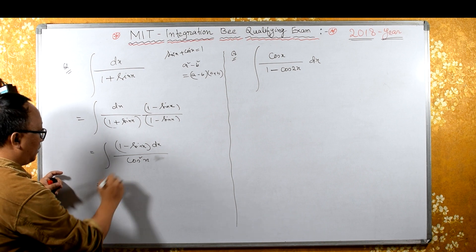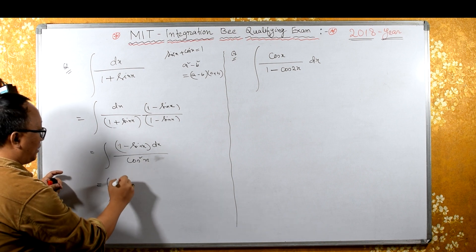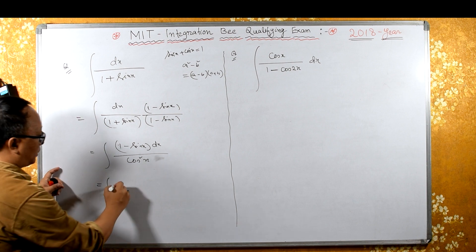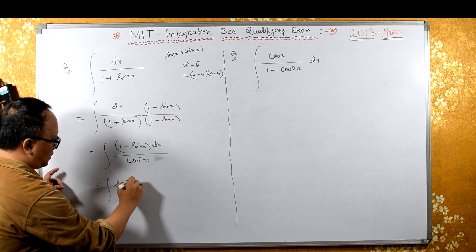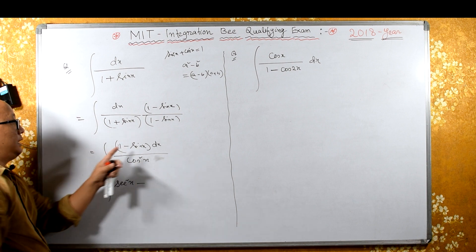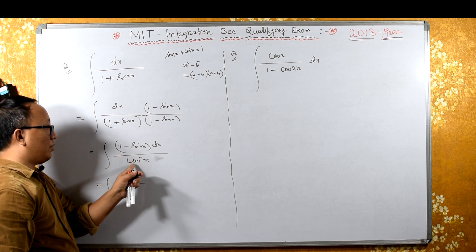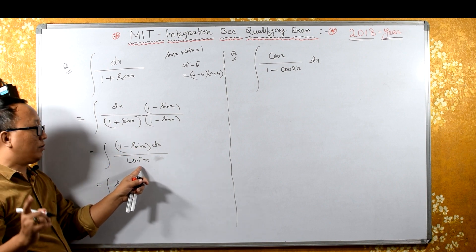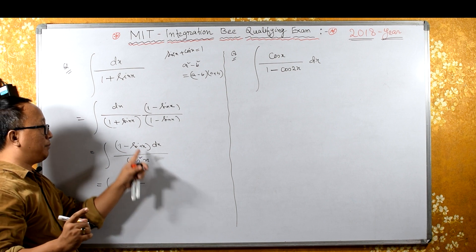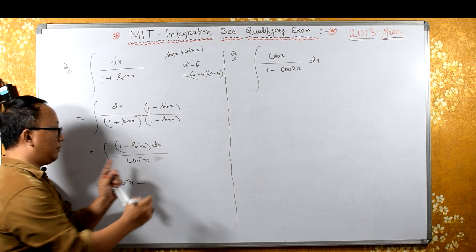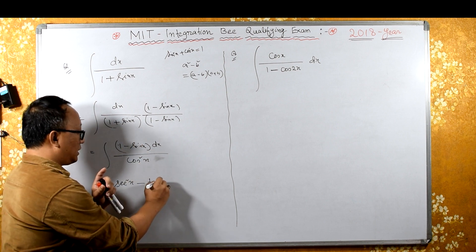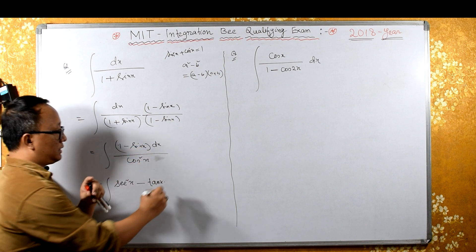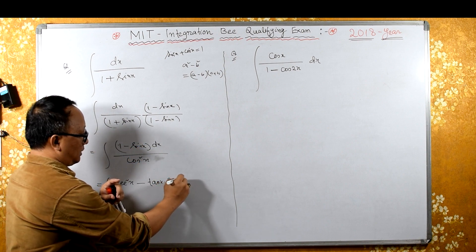Separating the terms: 1/cos²x is sec²x, and sinx/cos²x can be split as (sinx/cosx) · (1/cosx), which is tanx · secx. So the integral becomes the integral of sec²x minus sec(x)tan(x) dx.